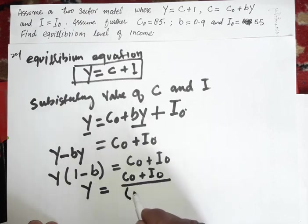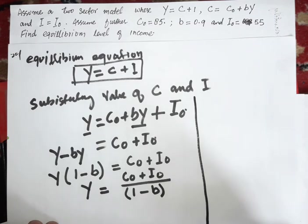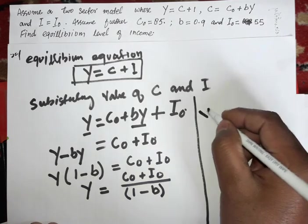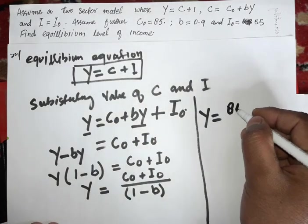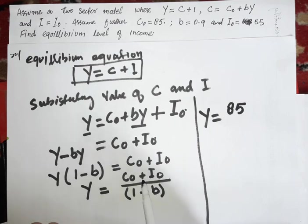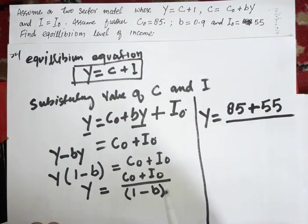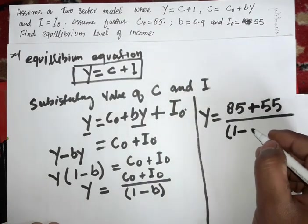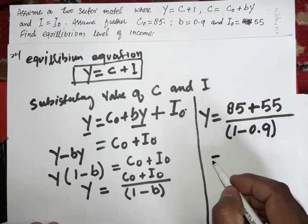Rearranging algebraically, Y minus bY equals C0 plus I0, so Y(1 minus b) equals C0 plus I0, therefore Y equals (C0 plus I0) divided by (1 minus B). Now substituting the values, Y equals C0 (85) plus autonomous investment (55) divided by 1 minus B (0.9).